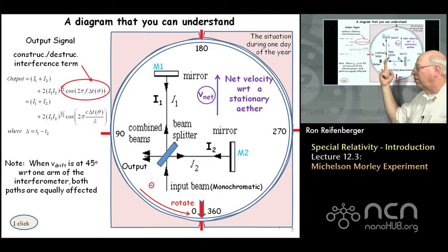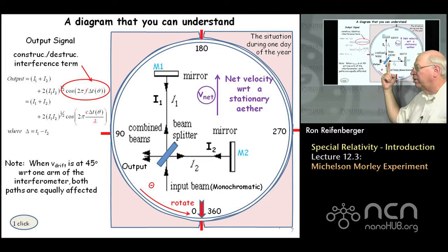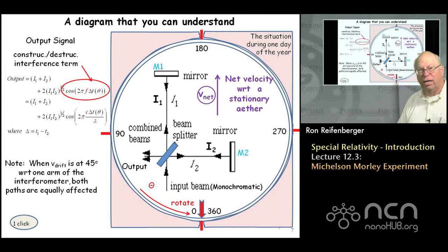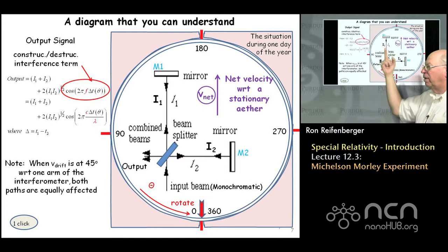The length of the interferometer from the partially silvered mirror to reflecting mirror M1 is L1, and the distance to mirror M2 is L2. A certain intensity of light I1 moves in one arm, and a different intensity I2 moves in the other arm. After bouncing off their respective mirrors, these two light beams recombine and form the output of the interferometer — the signal we're going to measure. This signal shows up as an interference pattern that will shift its position on the screen if there's a difference in transit time between the two paths.